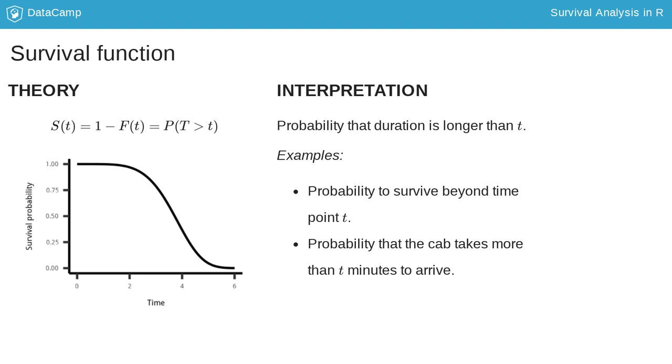So for this example curve here, the probability that it takes more than two minutes is almost one, but we are quite sure that it will not take longer than six minutes. Note that I am using different scales to explain the two examples. In the survival example the time on the x-axis is in years, and here in the cab example the x-axis is in minutes.